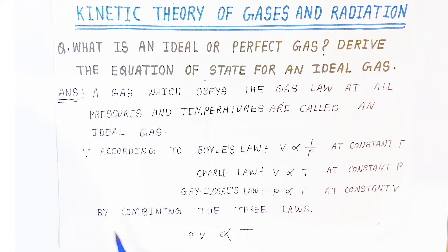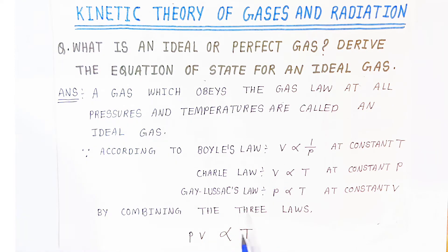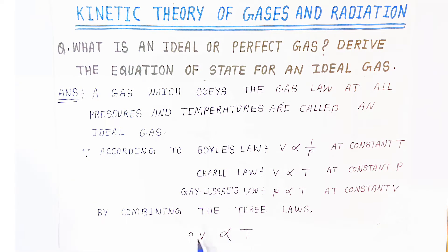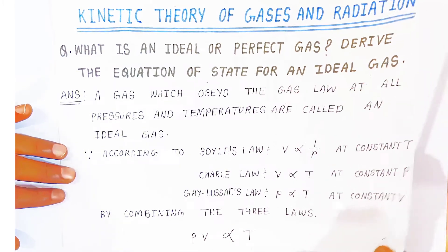When you combine all three laws, the product of pressure and volume is directly proportional to temperature — PV ∝ T. This is the combined result of Boyle's law, Charles' law, and Lussac's law.